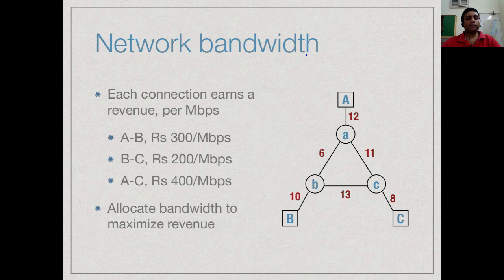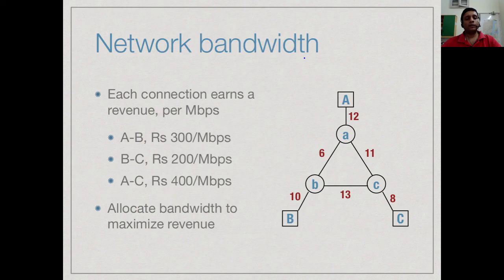Now, on the other side we earn some money from these customers which is not uniform. For the A-B link we get Rs 300 per Mbps per month. For B to C we get only 200 but for A to C we get 400.